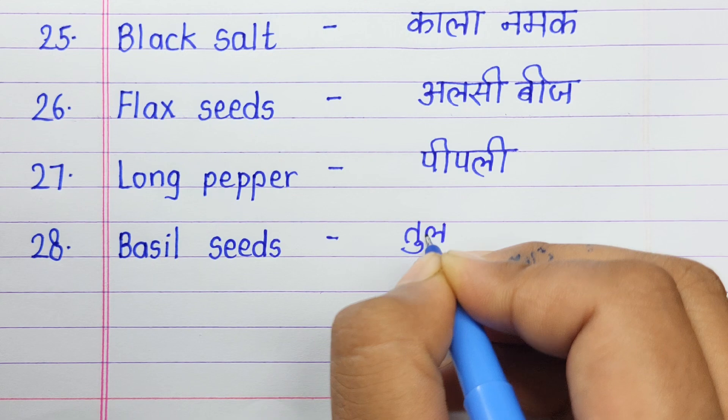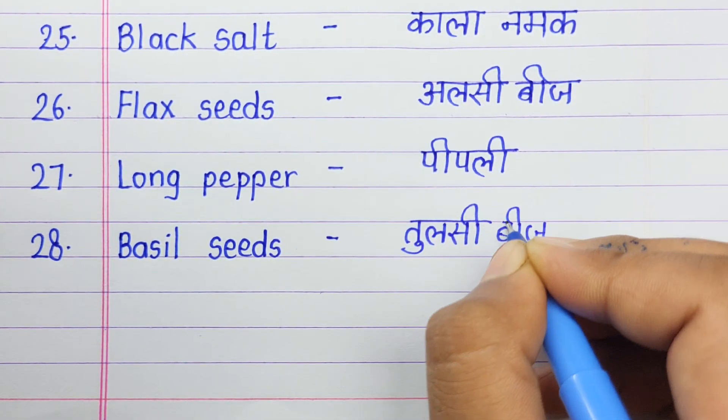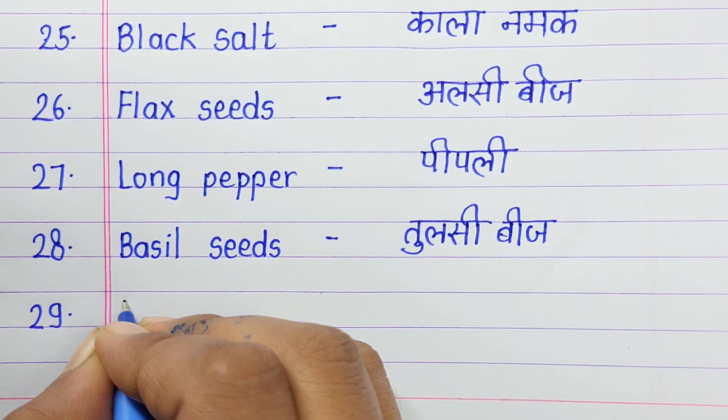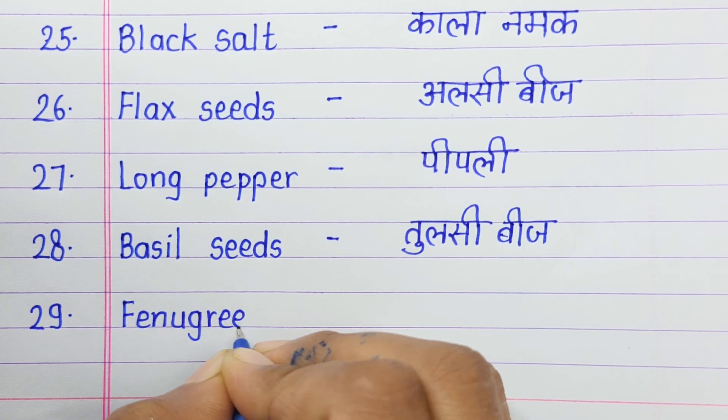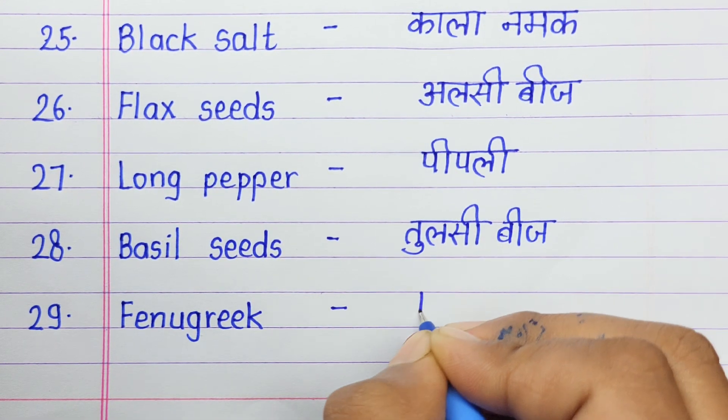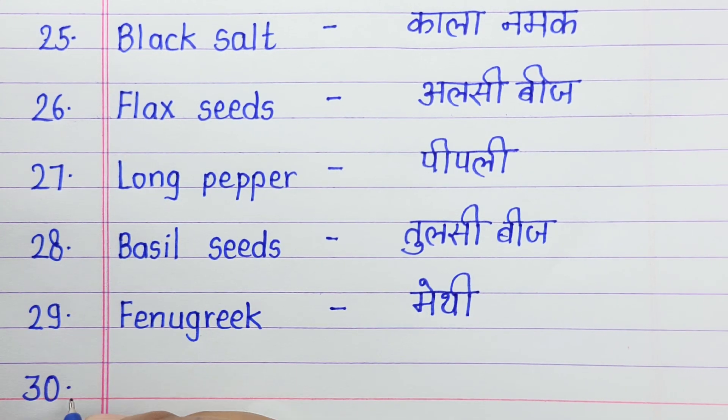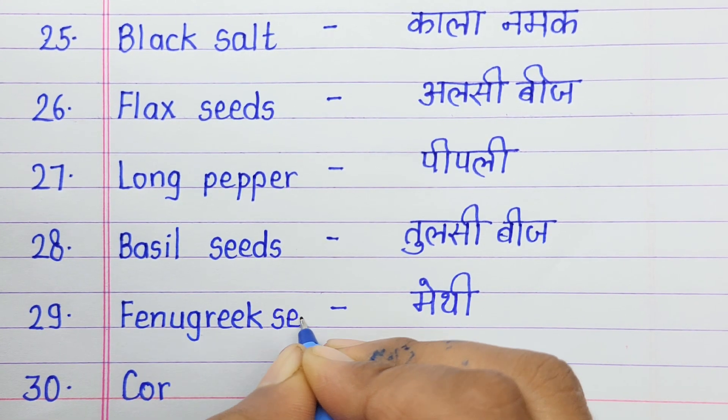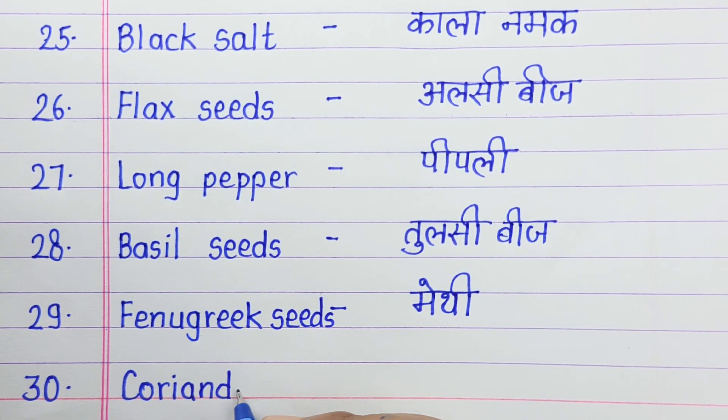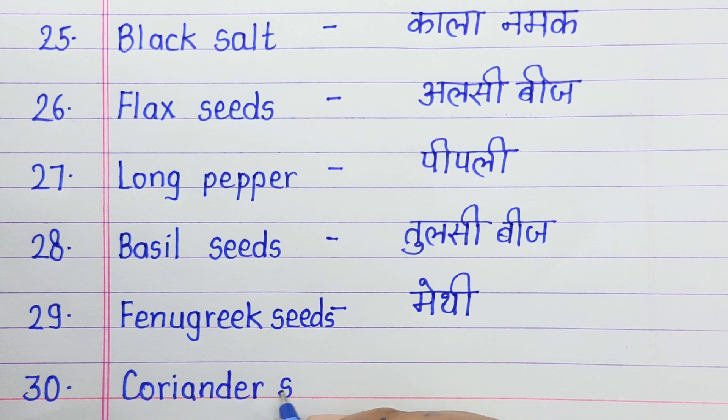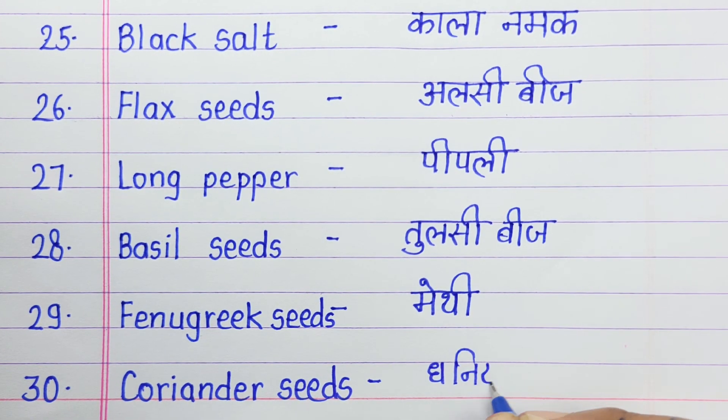Number twenty-eight: Basil seeds means tulsi beej. Number twenty-nine: Fenugreek seeds means methi. Number thirty: Coriander seeds means dhaniya.